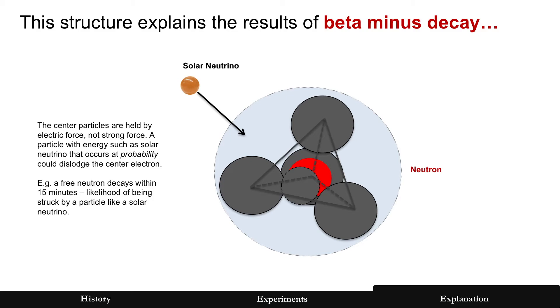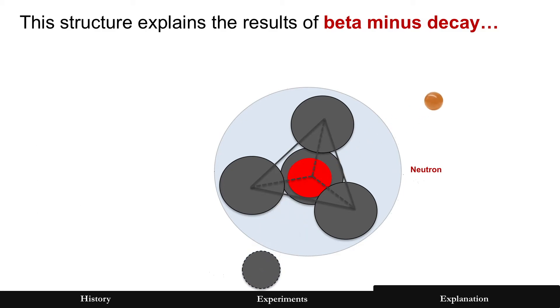All right, this structure explains results of beta minus decay. Remember, this is when a neutron becomes a proton. But imagine an event that has to occur, and it occurs at some probability, such as solar neutrinos with sufficient kinetic energy, because that energy is required to dislodge something, and it dislodges the electron. And this is exactly what is seen in beta minus decay when a neutron becomes a proton and ejects those two particles.